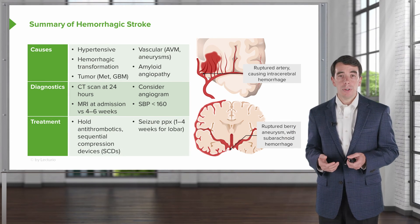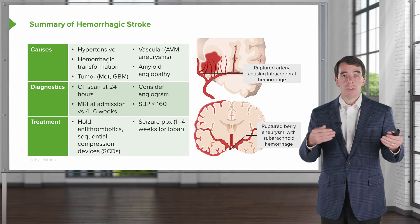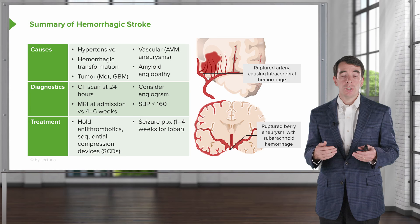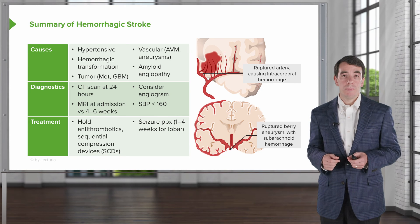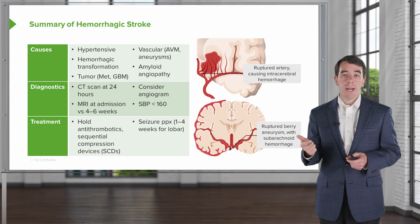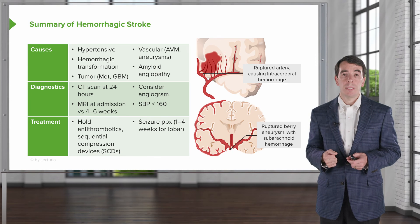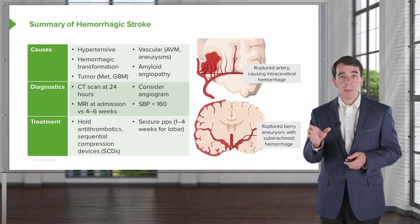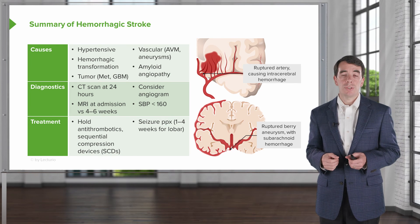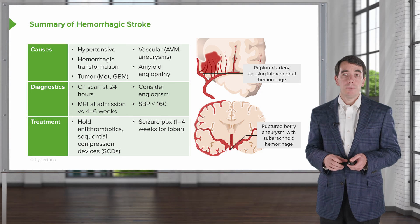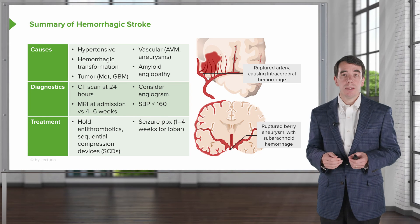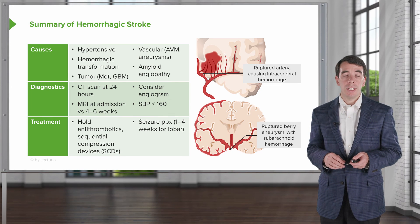Treatments for hemorrhagic stroke are very different from ischemic stroke. With ischemic stroke we add antiplatelets and anticoagulants; with hemorrhagic stroke we take those away. We hold antithrombotics, stop anticoagulants, and don't use them for prophylaxis in the hospital — instead using sequential compression devices. Some patients may develop seizures, so we manage those potential side effects, particularly in hemorrhages involving the outer cortical surface and gray matter. This summary gives us an idea of the key considerations we'll explore in greater detail.